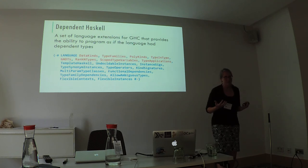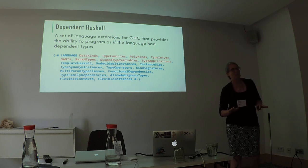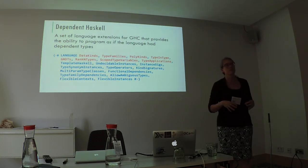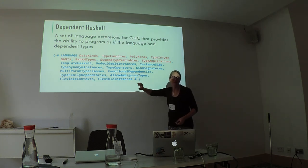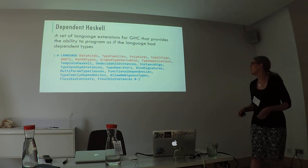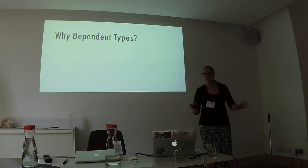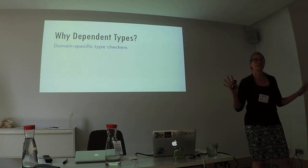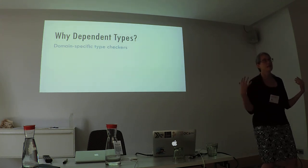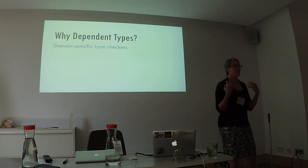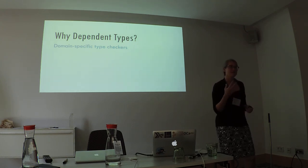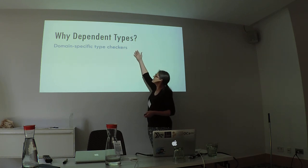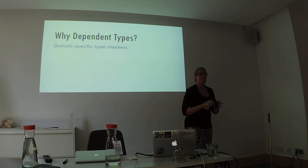I'm using the phrase 'Dependent Haskell,' and that's not really a thing. What I mean is that the Glasgow Haskell Compiler has a lot of experimental language features, and if you put enough of them together, you can pretend you have a dependently typed language. Why would you want to do that? Haskell has a fabulous type system, great for expressing constraints about my programs. I would like to use the capabilities of dependent types to make my type checking better fit the domain I'm programming in.